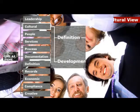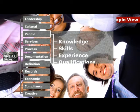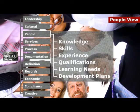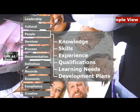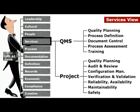The cultural view articulates the shared values that motivate your people to care about quality, and the initiatives taken by management to develop and sustain that culture. The people view addresses the competencies your people need to deliver quality.